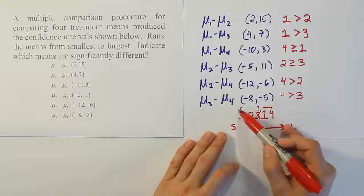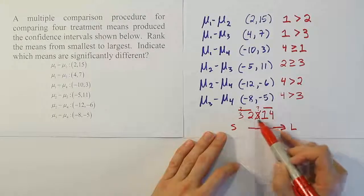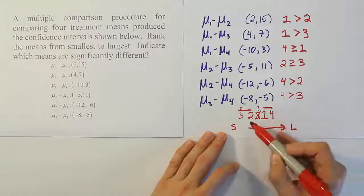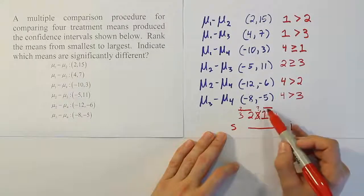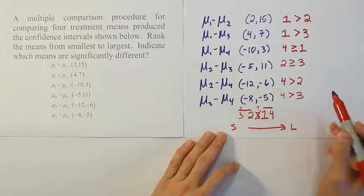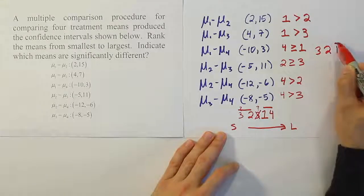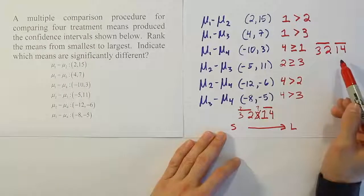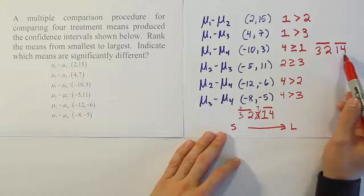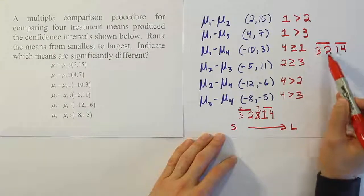The final order from smallest to largest is: 3, 2, 1, 4 — with a bar joining 2 and 3, and a bar joining 1 and 4. We verify: mean 4 is greater than mean 2 (not connected by a bar, so truly bigger), and mean 4 is greater than mean 3. The conclusion is that means 1 and 4 are significantly bigger than means 2 and 3, but within each pair — 1 and 4, and 2 and 3 — there is no significant difference.